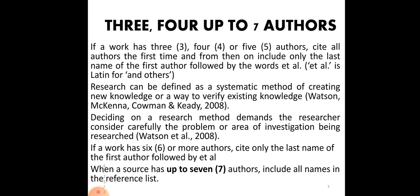Sometimes we have three, four, or up to seven authors — how do we cite them? If a work has three, four, or five authors, cite all authors the first time, and from then on include only the last name of the first author followed by 'et al.' Note that 'et al.' is a Latin term meaning 'and others.' After 'et' there is nothing, and after 'al' there is a single L followed by a full stop.